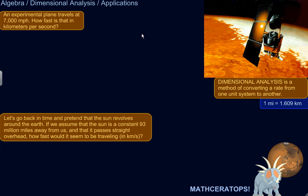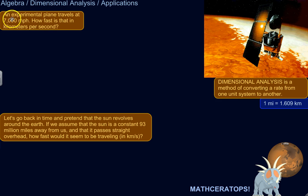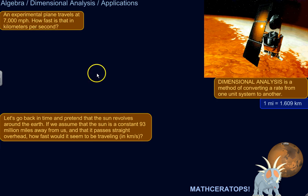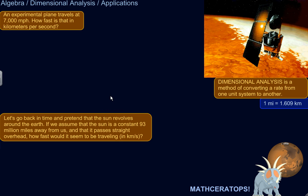That is one very practical application, and I'll show you an example here. We'll convert 7,000 miles per hour — that's a rate, 7,000 miles per one hour — into kilometers per second, a different unit system. Then we'll look at a different example which goes a little further and uses dimensional analysis to see things from a different perspective.